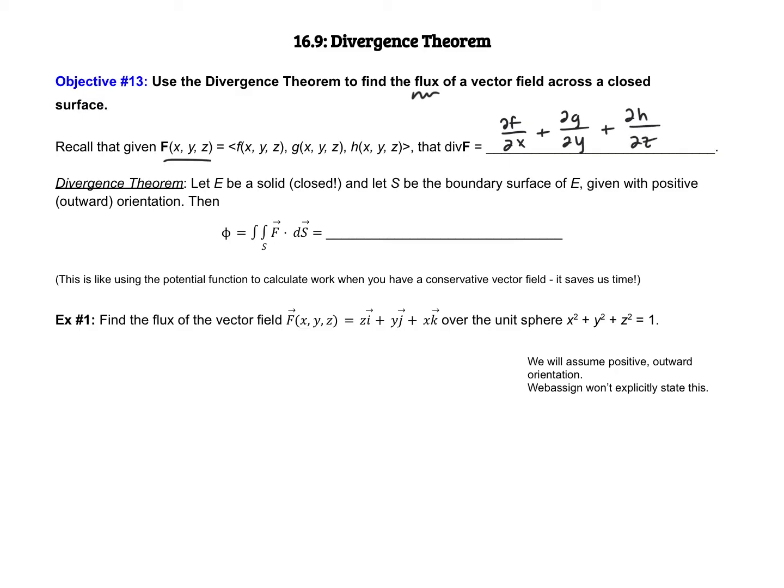And if you remember, divergence relates to the flow of a fluid. Okay, so here's what that divergence theorem says. Let E be a solid, so a closed solid, and let S be the boundary surface of E, given with positive, which means outward orientation.